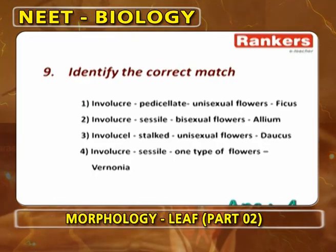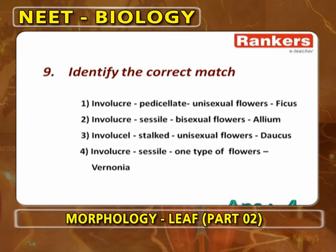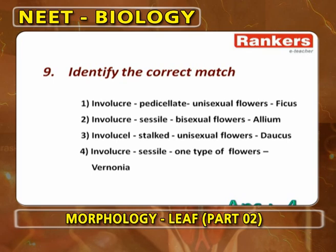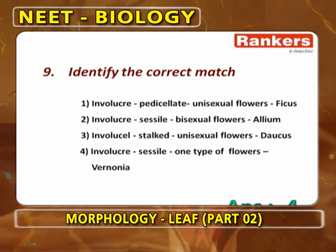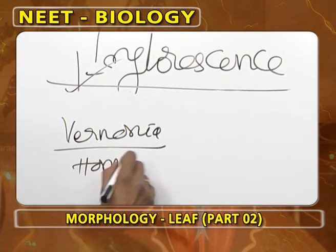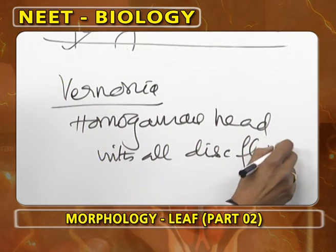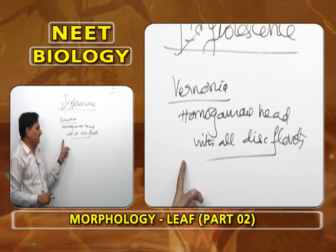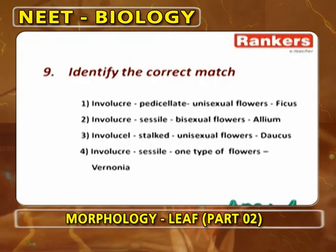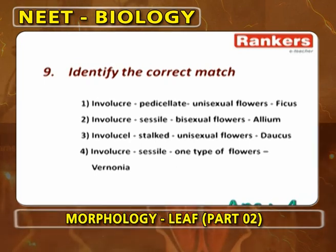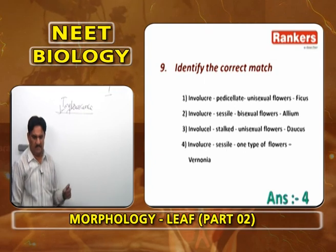Next: identify the correct match. Involucre, pedicellate, unisexual flowers — Ficus. Involucre, sessile, bisexual flowers — Allium. Involucre, stalked, unisexual flowers — Dolichous (unisexual is wrong here). Involucre, sessile, one type of flowers — Vernonia. Vernonia is a homogamous head with all disc florets. Head means involucre; sessile flowers; only one type of florets (disc florets). So the correct match is 4 — Vernonia.